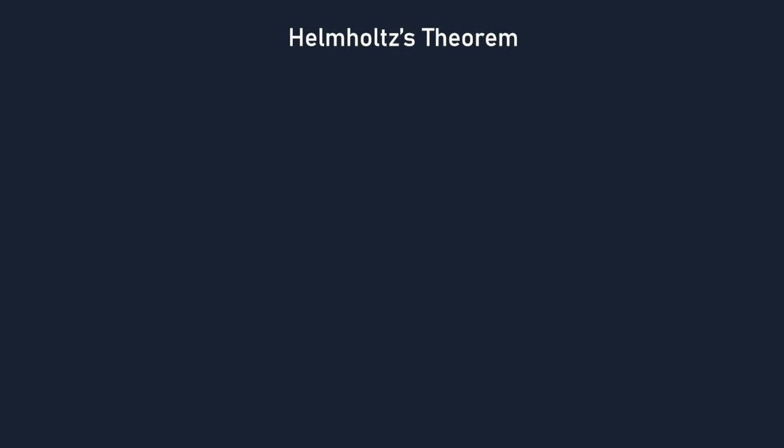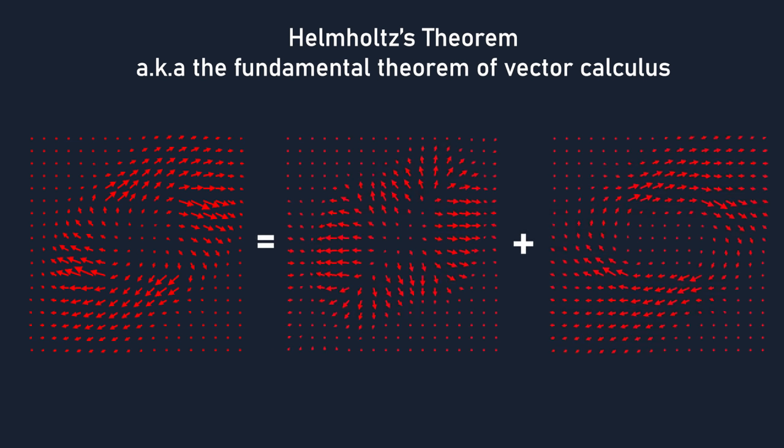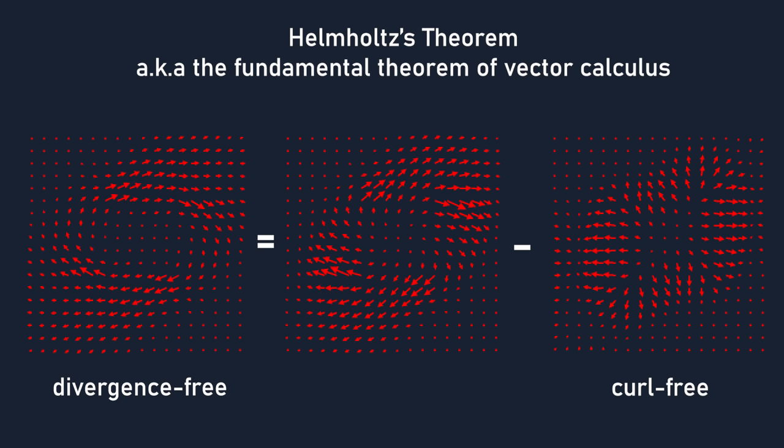According to Helmholtz's theorem, also known as the fundamental theorem of vector calculus, any vector field can be expressed as the sum of two vector fields, one which is free of curl and one which is free of divergence. There's no direct way to compute the divergence-free part, so our goal is to compute the curl-free part, then subtract that from the original velocity field to get the divergence-free part.